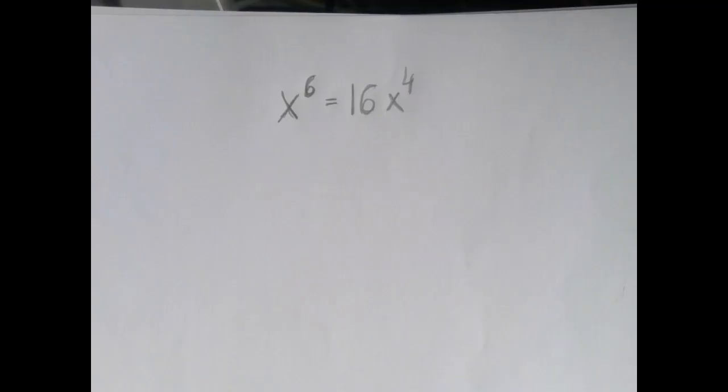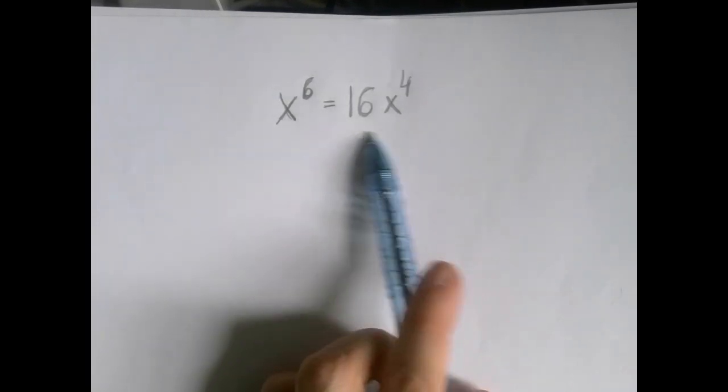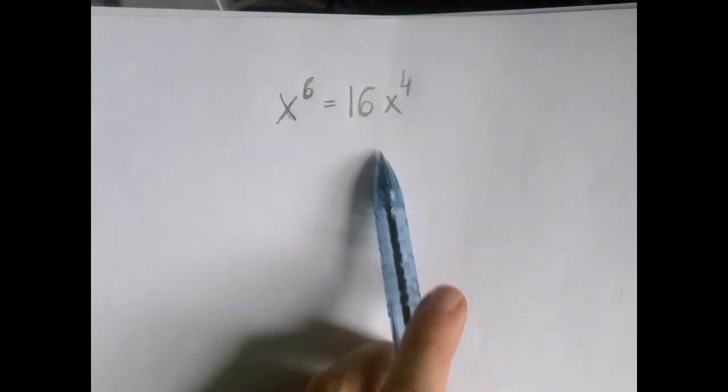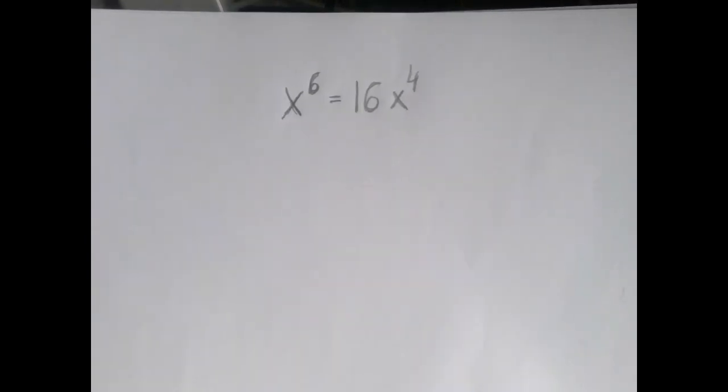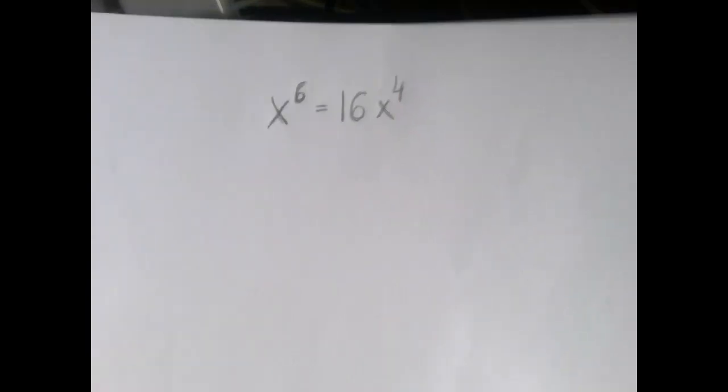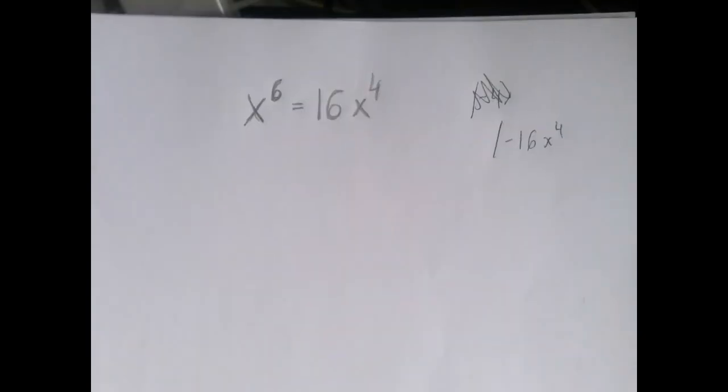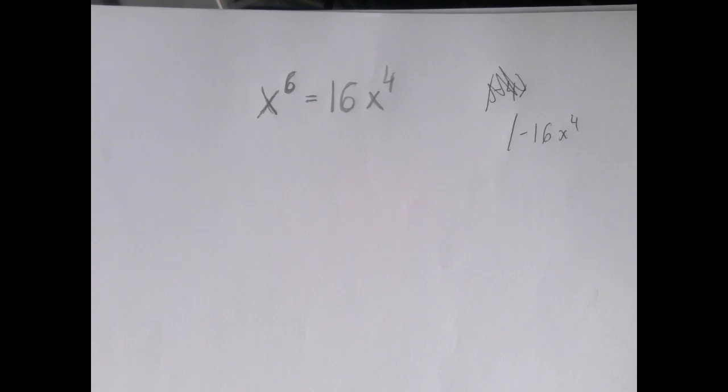So in this particular case, we need to wipe out one side to zero. It's probably smarter to subtract this piece. That way, we do not create negative leading coefficient. Whenever possible, negative leading coefficient should be avoided. So we're going to subtract 16x^4 from both sides.